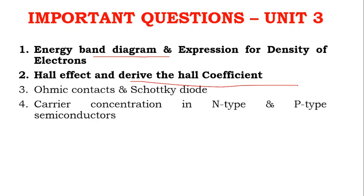The expression for density of electrons is a very important question in Unit 3. Hall effect and effective mass are also confirmed questions. Ohmic contacts and Schottky diode is worth 8 marks. Carrier concentration in N-type and P-type semiconductors is a very important question, and Ohmic contacts and Schottky diode is mainly theory with diagrams.